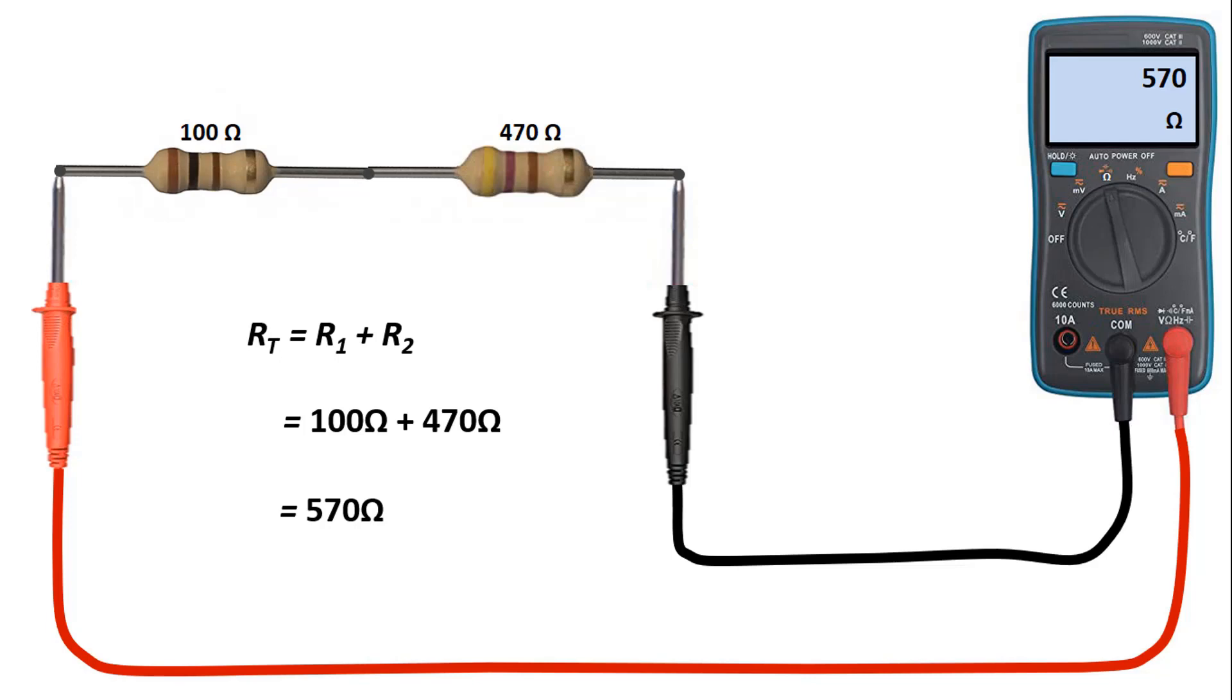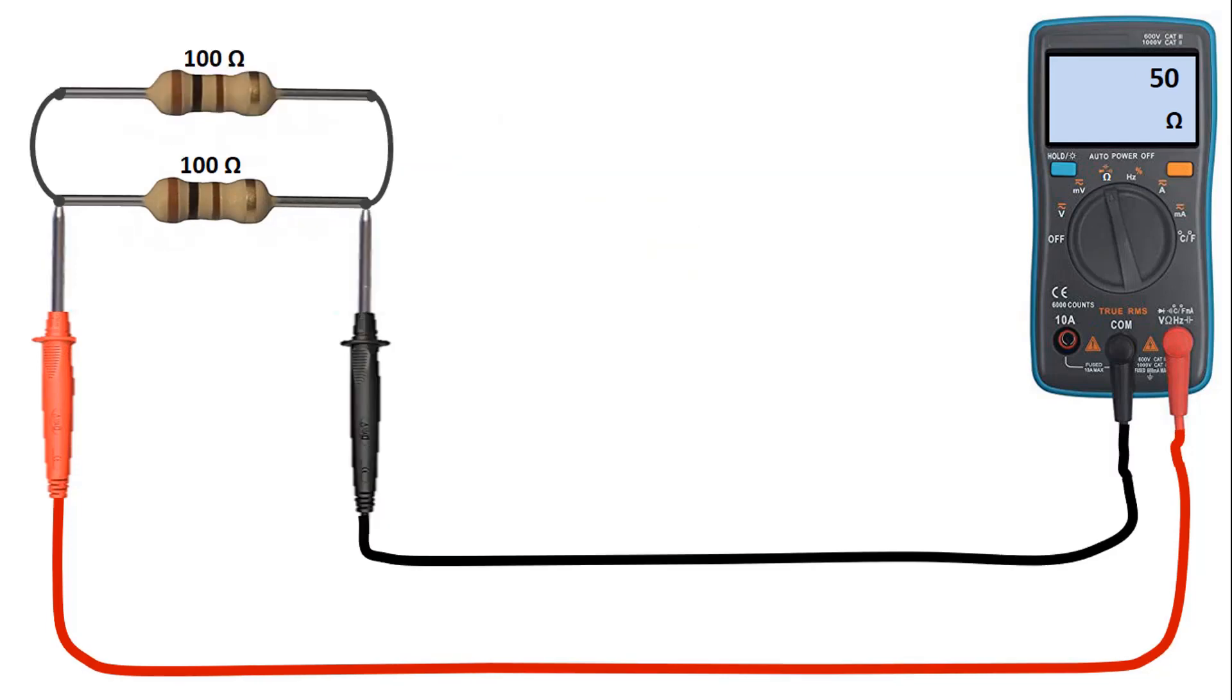When we need lower resistors, we can connect lower resistors in parallel, because in parallel connected resistors, equivalent resistance is equal to the sum of inverse of resistors.